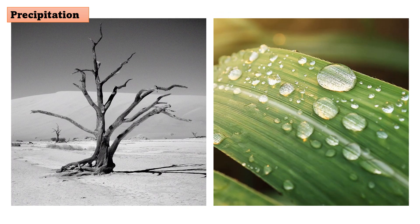Precipitation: Subtropical regions can have varying precipitation patterns. Some areas like the Mediterranean have dry summers and wet winters. Other subtropical areas like the Southeastern United States and parts of China experience significant rainfall throughout the year, with humid conditions.